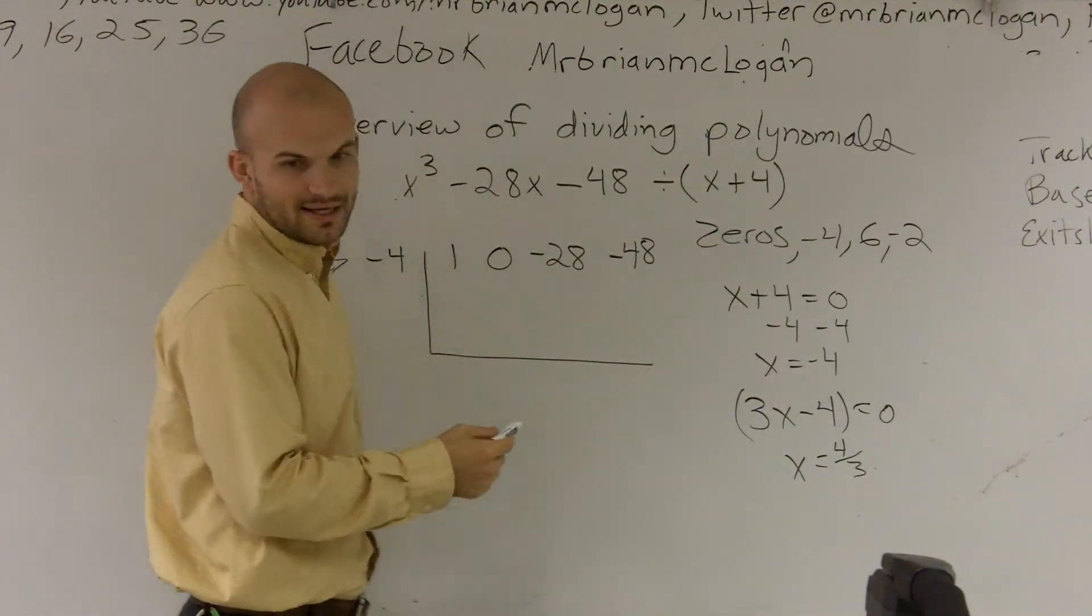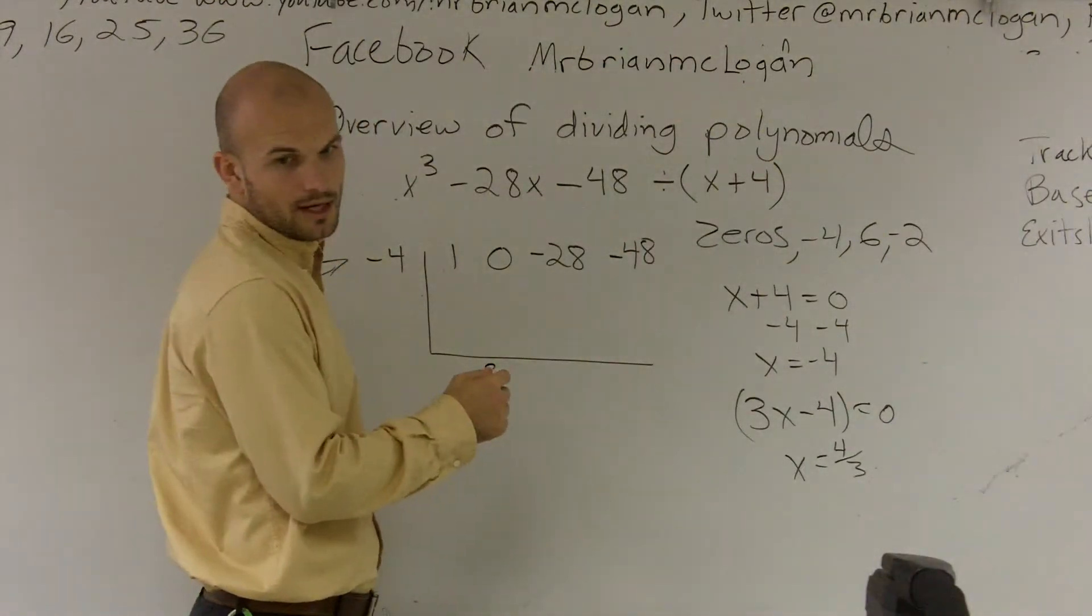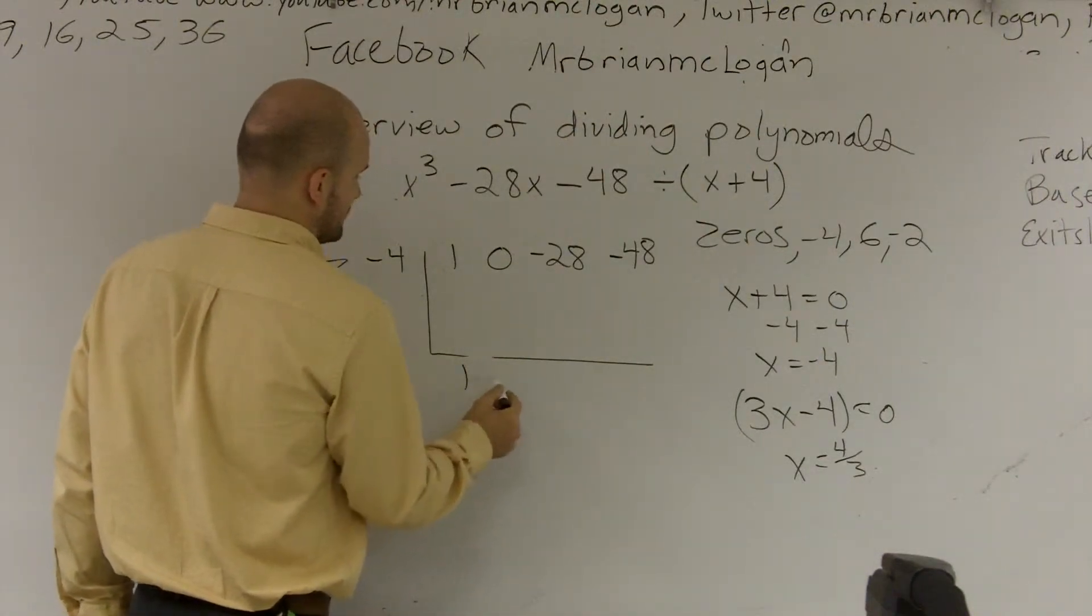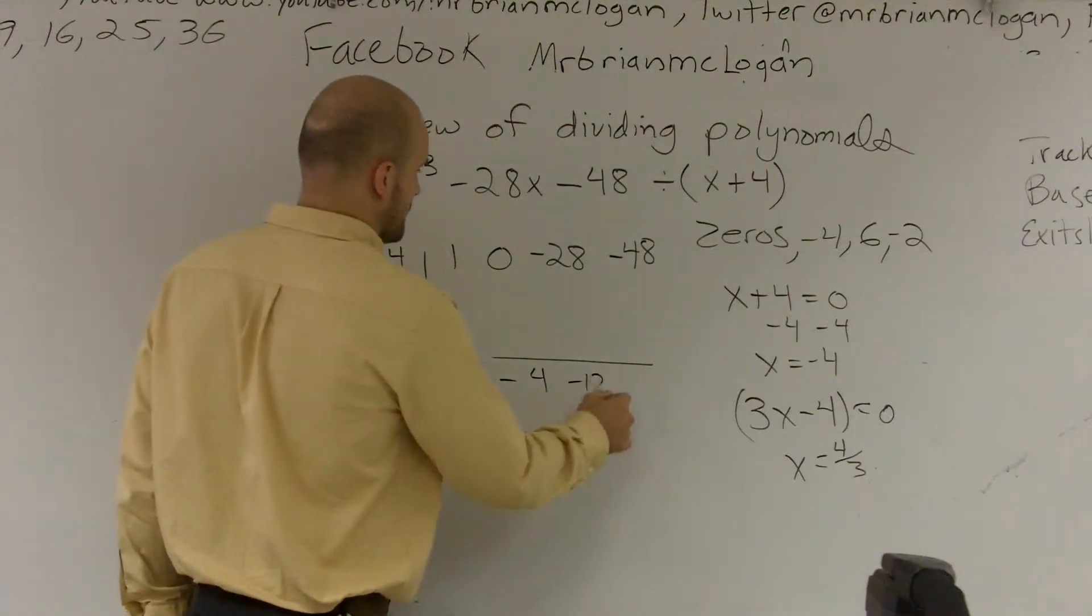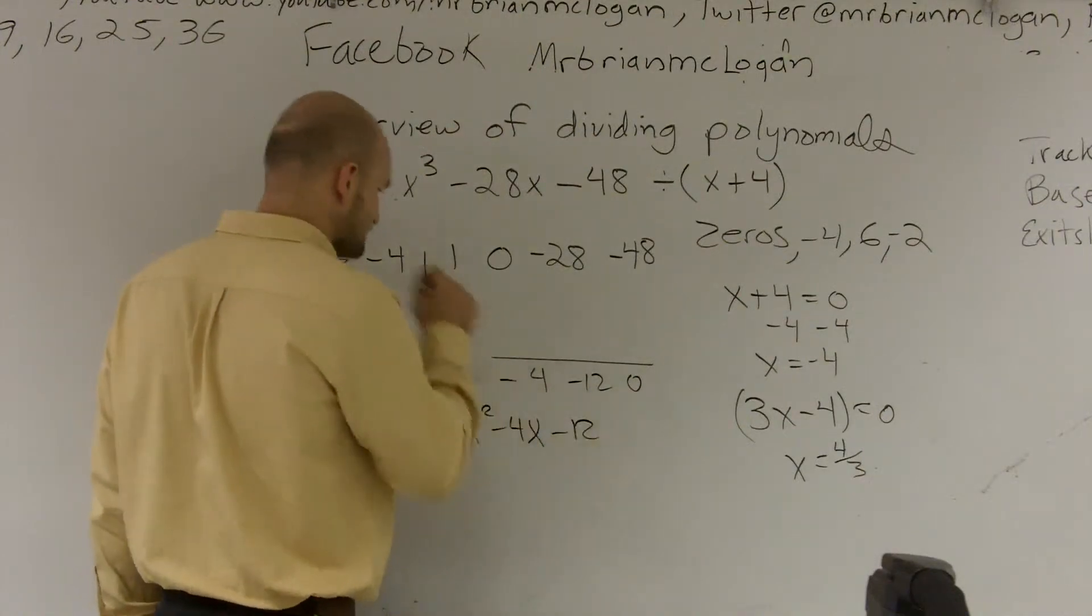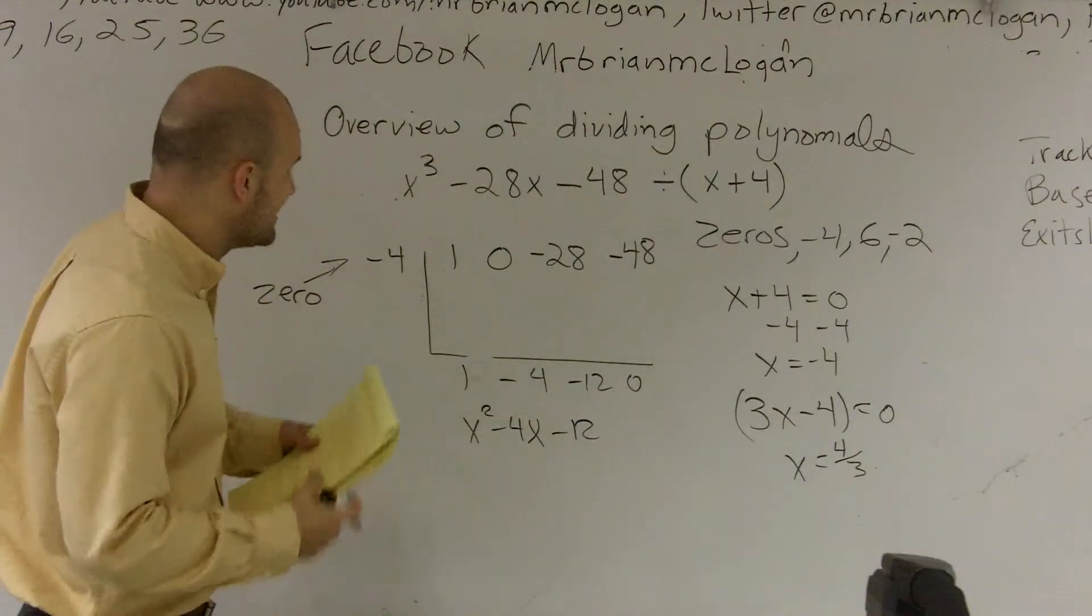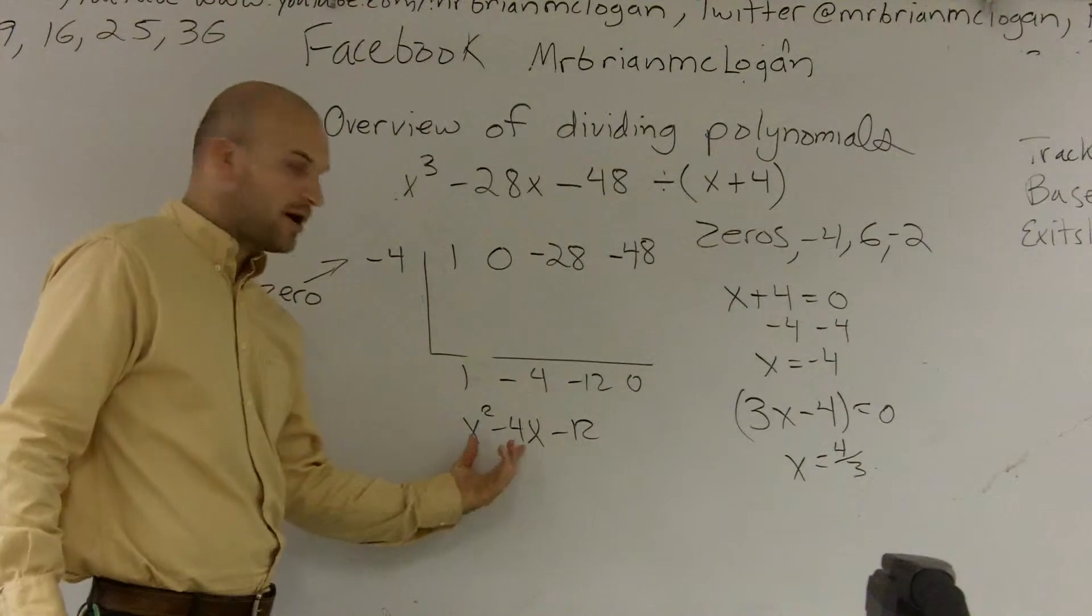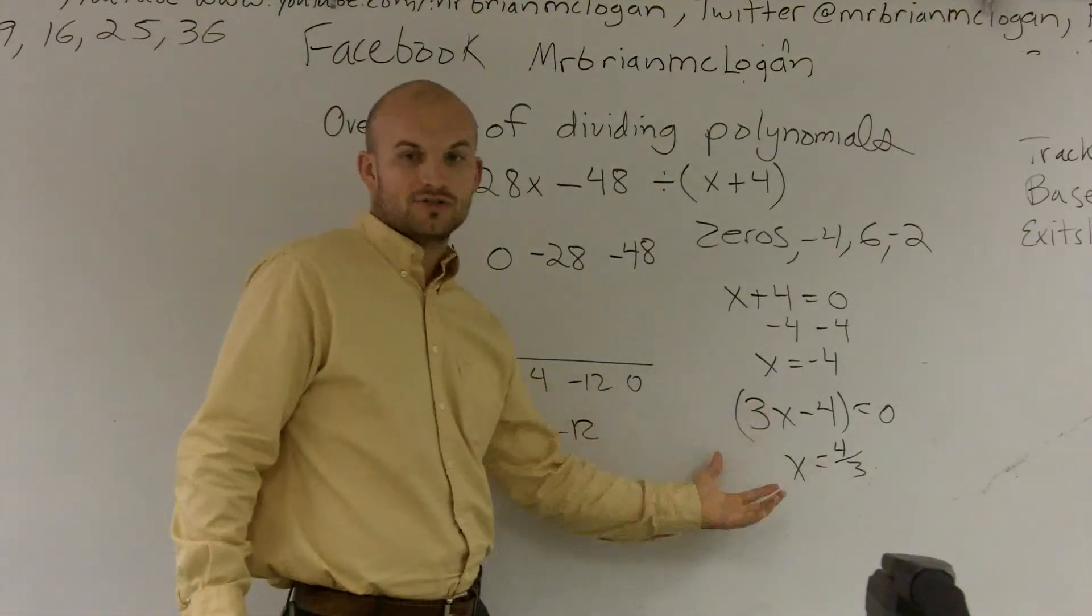But what I get is, again, I get my polynomial down here, x squared, or I get 1, negative 4, negative 12, 0. So I get x squared minus 4x minus 12 is my polynomial. So again, when I'm taking the zero, what happens is I am now given my polynomial, which is another factor, which I can factor it down to get my other two factors.